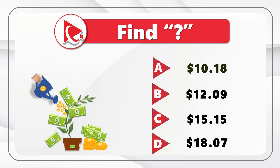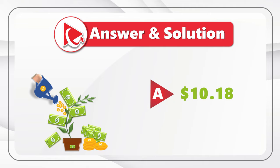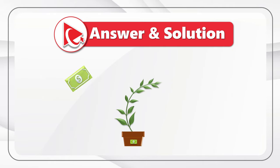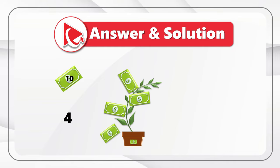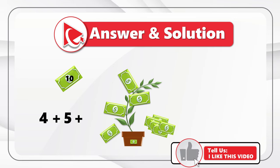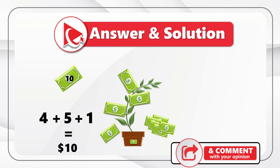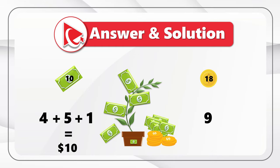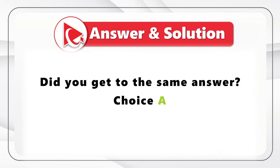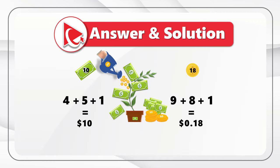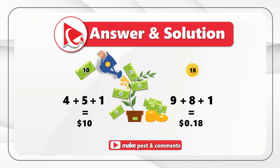The correct answer is Choice A, $10.18. I counted $10 in bills: four at the top of the money tree, five on the right, and one hard-to-notice dollar bill on top of the flower pot. For coins: nine coins to the right of the flower, eight coins coming out of the watering can, and one coin on top of the watering can which is easy to miss — totaling 18 cents. Did you get the same answer? If not, post your answer in comments.